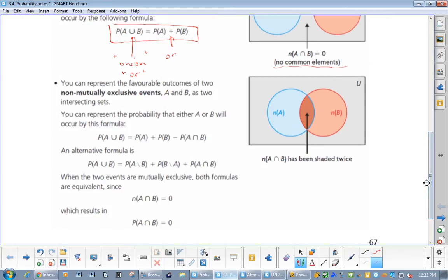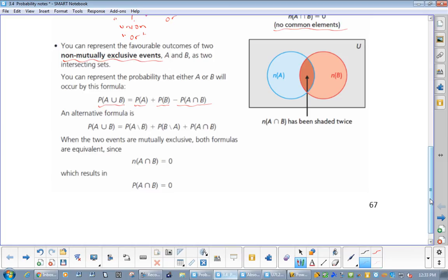Now, if they're non mutually exclusive, then we have, just like we just did in the last question, where the probability of A or B is the probability of A plus the probability of B. And because you counted the A and B twice, we're gonna subtract it out once.